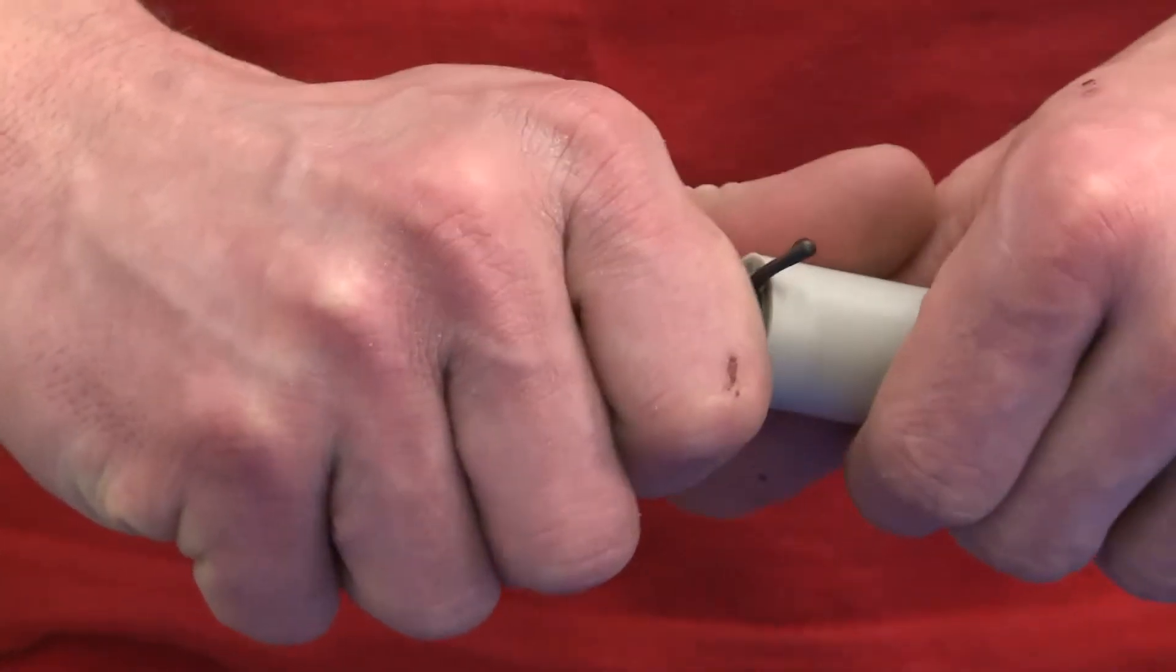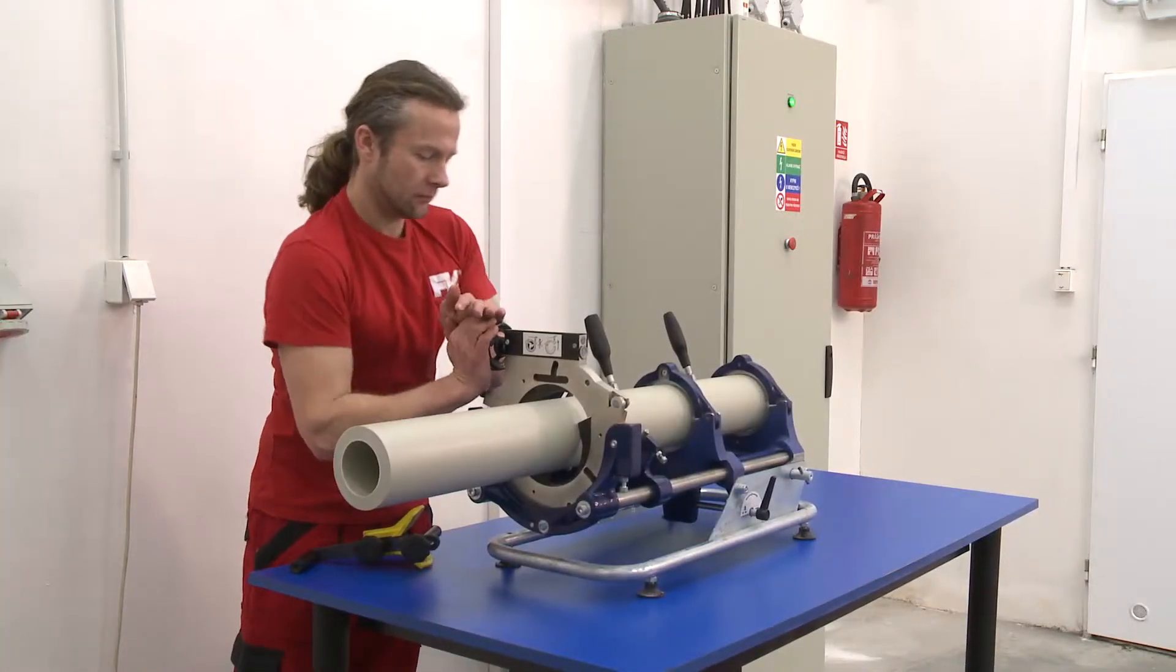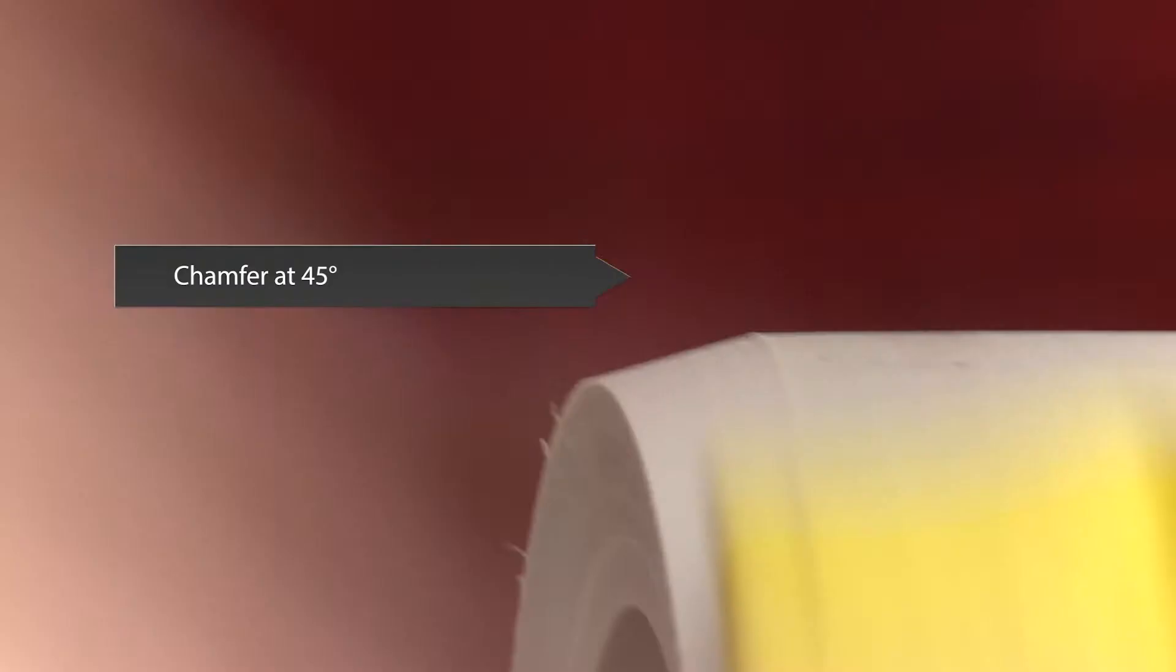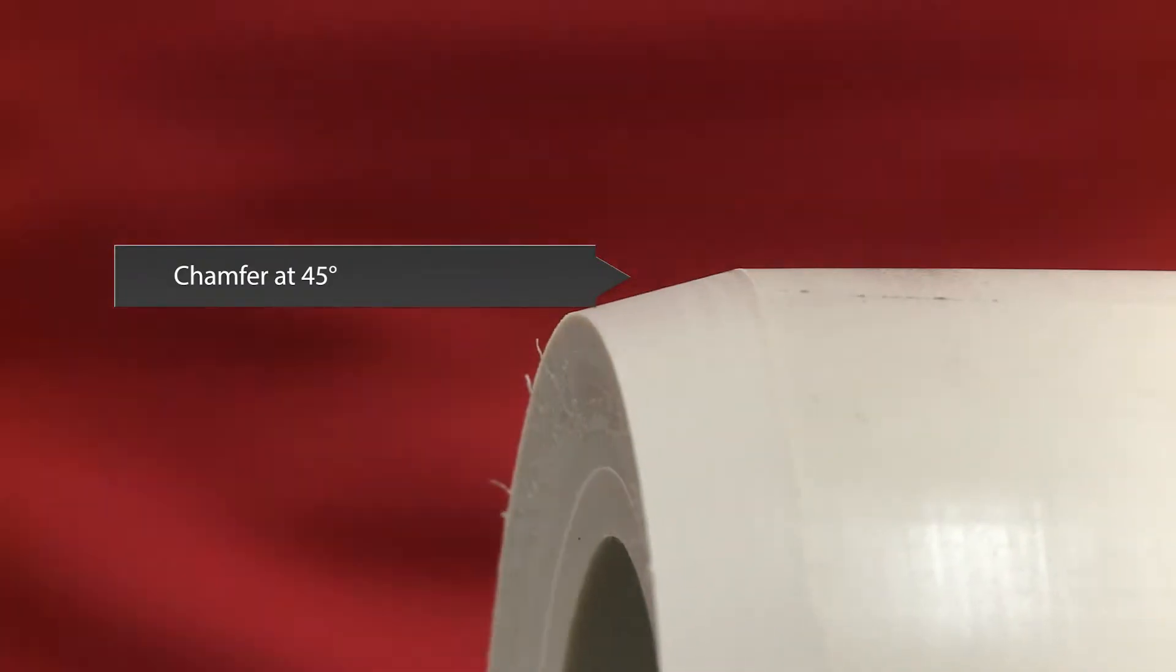For pipes with a diameter of 50mm and more we recommend to chamfer the outer edge of pipes with a tool at a 45 degree angle because this prevents so-called grading material.